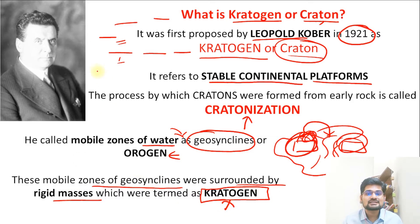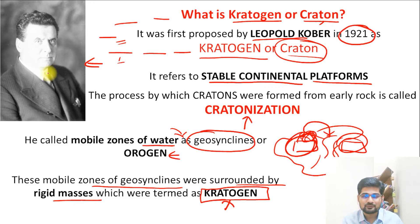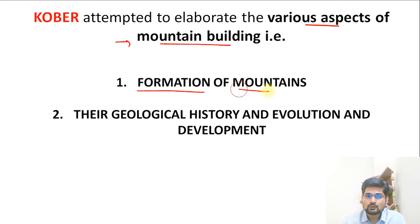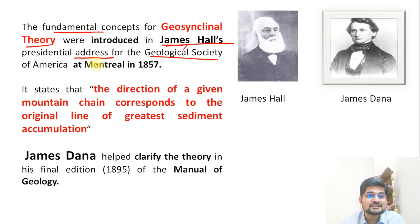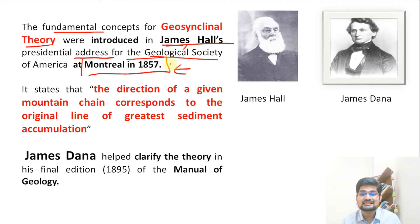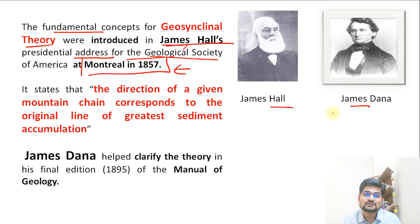The kratogen and geosyncline concept was discussed by Leopold Kober in 1921. Kober attempted to elaborate various aspects of mountain building — the orogenetic process — including the formation of mountains and their geological history and evolution. The fundamental concept was actually introduced by James Hall in his presidential address for the Geological Society of America in Montreal in 1857, and further clarified by James Dana. The concept's origin is credited to Hall and Dana, but Kober gave it a more validated form.